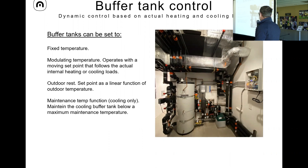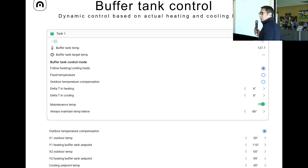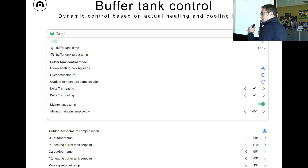There is also a maintenance temperature function — in cooling, if you don't want to stress the heat pump in a hot summer, you can maintain your buffer tank so it never goes above a certain temperature by setting this function. Here is how the control interface looks for the buffer tank. You can see the target temperature, which is the actual temperature we are trying to dictate to the buffer based on the modulation logic.